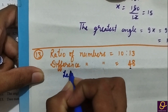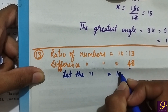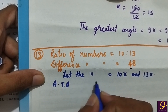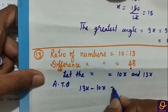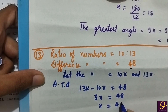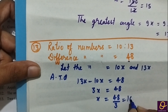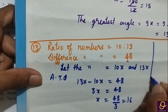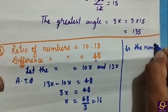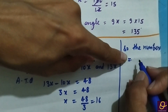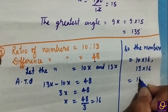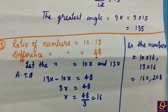Now the second method. Let the numbers equal to 10x and 13x. According to the question, their difference is given: 13x − 10x = 48, so 3x = 48, and x = 48 ÷ 3 = 16. So the numbers are 10 × 16 = 160 and 13 × 16 = 208. The answer is the same from both methods.